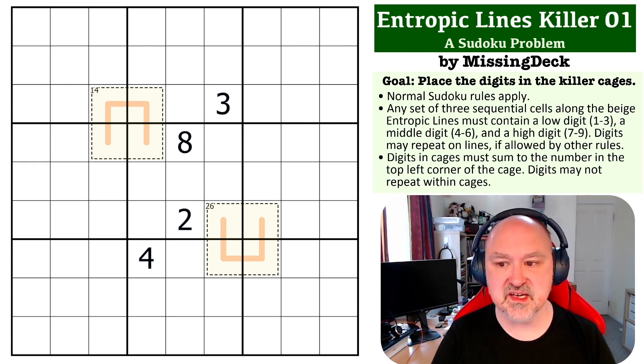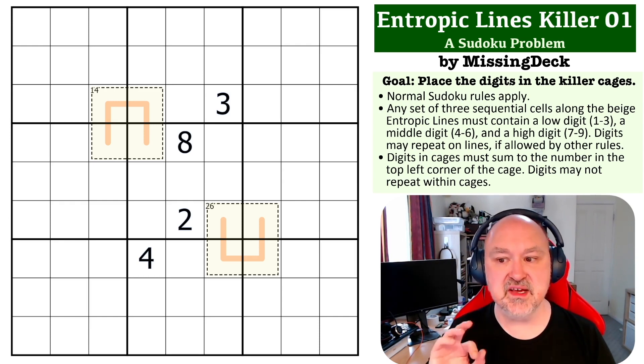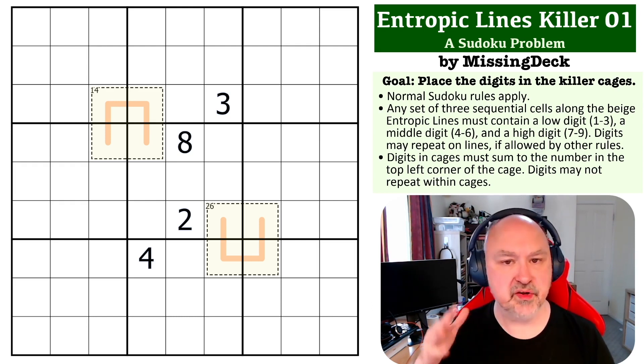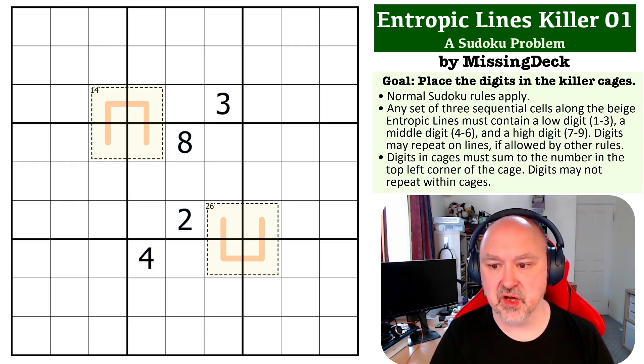So the way this one works is the goal is to figure out the digits that need to go into the killer cages. Along Entropic Lines, which is the first rule, any set of three cells along an Entropic Line must contain one low digit from 1 to 3, one middle digit from 4 to 6, and one high digit from 7 to 9.